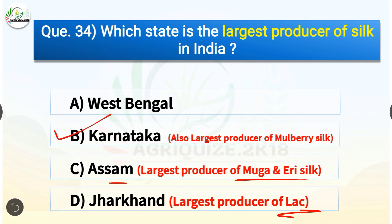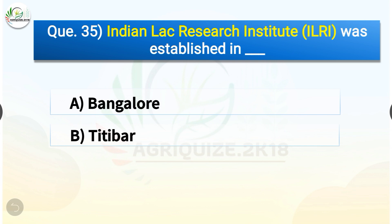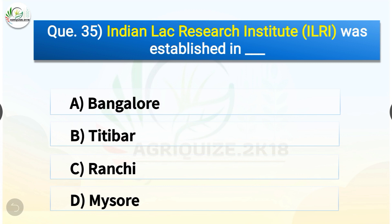Question number thirty-five: Indian Lac Research Institute was established in which location? The options are: Bangalore, Titibar, Ranchi, or Mysore. The correct answer is option C — Ranchi. Indian Lac Research Institute was laid at Ranchi on September 20, 1924. It has been named the Indian Institute of Natural Resins and Gums since September 20, 2007.